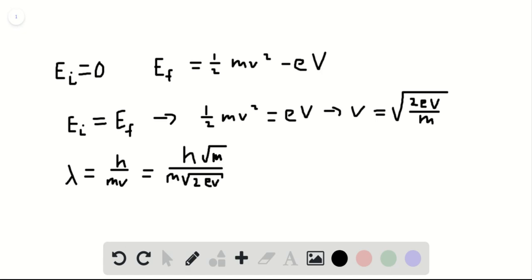Root m over m is the same as 1 over root m. So this is also equal to Planck's constant h divided by the square root of 2meV. We can box that in as the solution to our question.